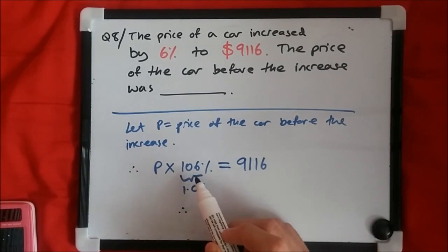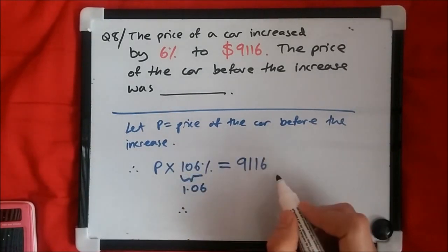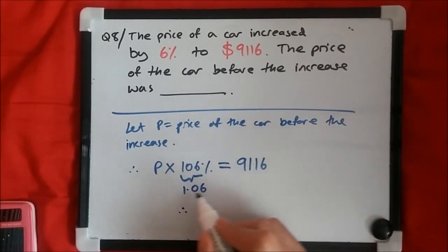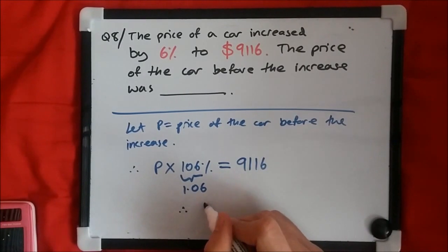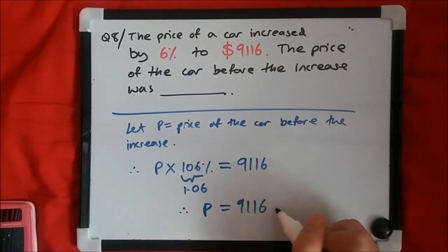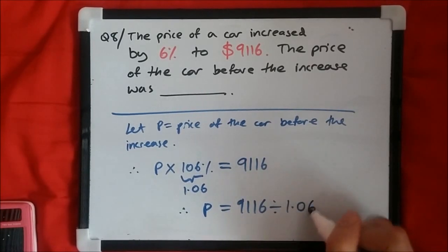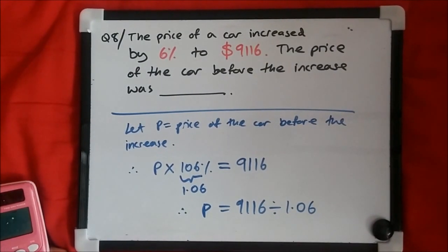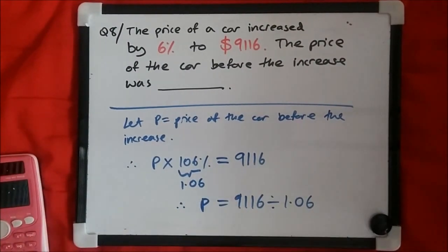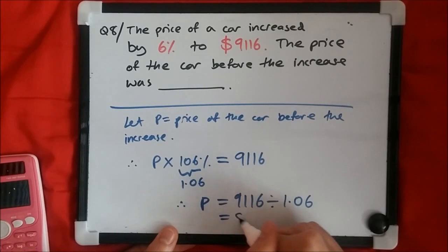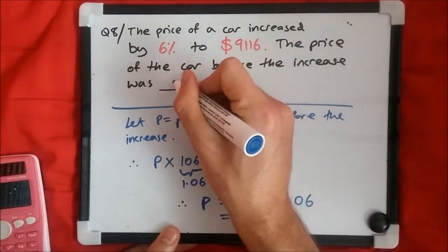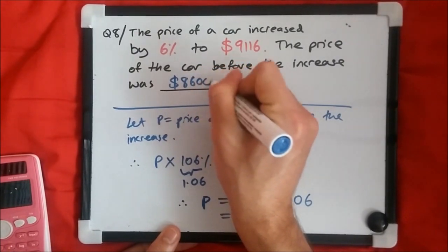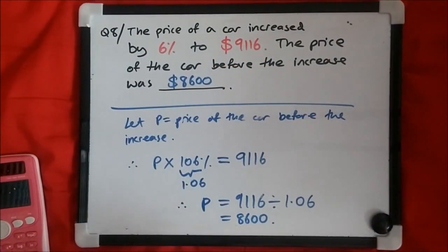So instead of p times 1.06, we rearrange to p equals 9,116 divided by 1.06. Putting that in the calculator: 9,116 divided by 1.06 gives us $8,600. That was the price of the car before the increase.